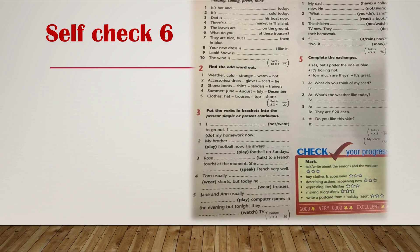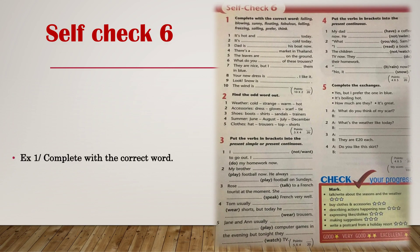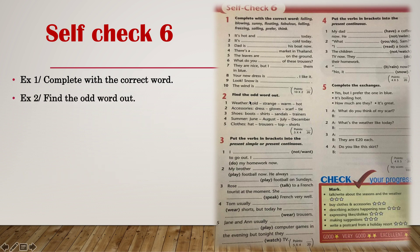Let's go on with Self Check 6. In Exercise 1, you are going to complete with the correct word — put these words into the blank spaces. In Exercise 2, you are going to find the odd word out, meaning you are going to omit the wrong one.